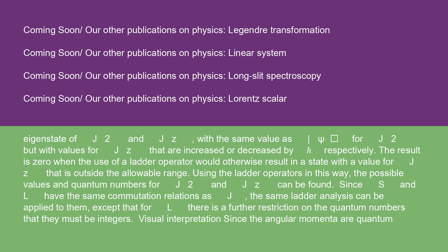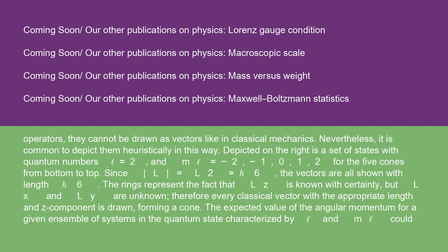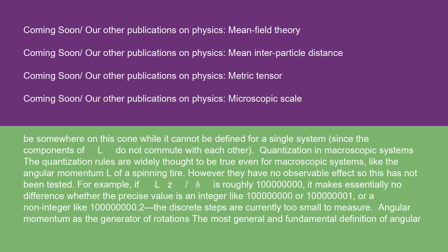Visual interpretations: since angular momenta are quantum operators, they cannot be drawn as vectors like in classical mechanics; nevertheless, it is common to depict them heuristically in this way. Depicted on the right is a set of states with quantum numbers l = 2 and m = −2, −1, 0, 1, 2 for the five cones from bottom to top. Since l(l+1) = 6, the vectors are all shown with length √6. The rings represent the fact that Lz is known with certainty, but Lx and Ly are unknown; therefore every classical vector with the appropriate length and z-component is drawn, forming a cone.